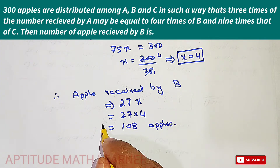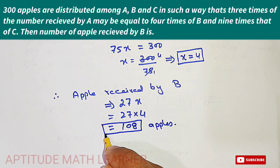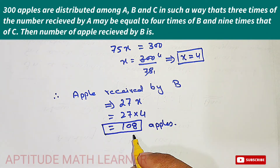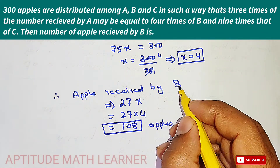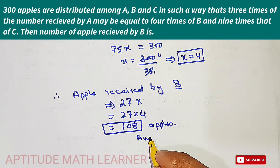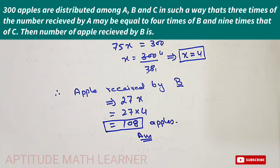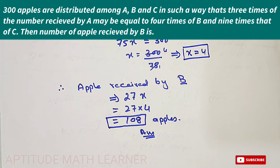So 108 is our answer — the number of apples received by B. I hope you understood completely. Thank you very much.